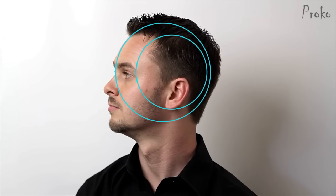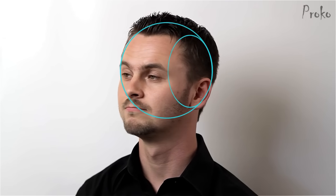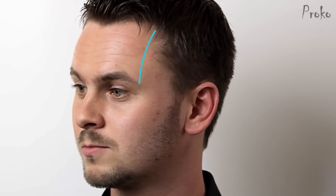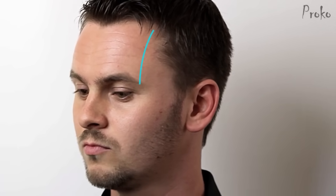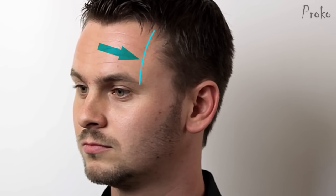The width of the oval depends on the direction the person is looking. Compare the width of the front plane to the width of the side plane. The top portion of the oval falls on the corner of the forehead. This is where the front plane meets the side plane. This area is usually rounded, so it's open to the artist's interpretation. But I've found that it usually lies near the end of the eyebrow.